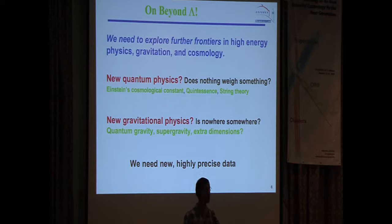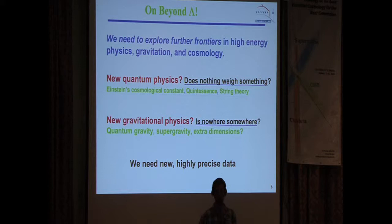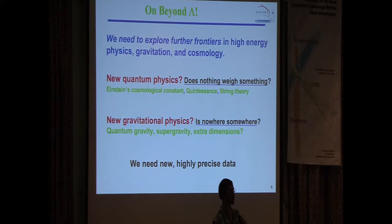We have to think of things beyond lambda, and we still don't know where to look. Does it arise from quantum physics, or from modification of Einstein's theory of gravity? I like to phrase the explanations as paradoxical questions to convey how revolutionary the physics is: Do we understand the quantum vacuum at all? Does nothing actually weigh something? Or if we have to modify gravity as an explanation — looking to extra dimensions beyond the three space and one time dimension we have — is nowhere somewhere? To do this, we need very clever theoretical ideas and highly precise data to rein in those ideas.